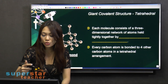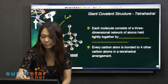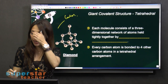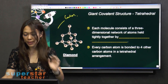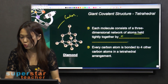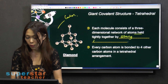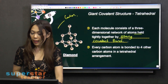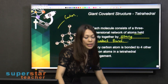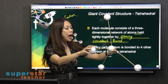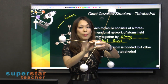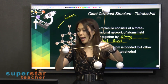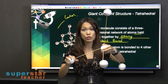Diamond also belongs to carbon. Each molecule consists of a three-dimensional network of atoms held tightly together by strong covalent bonds. Every carbon is actually bonded to four other carbon atoms, and they will form a tetrahedral arrangement.